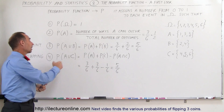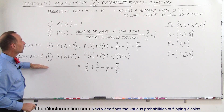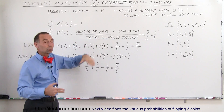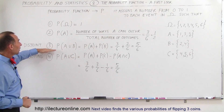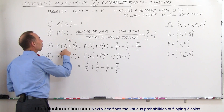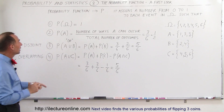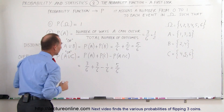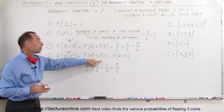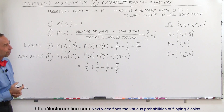Those are the four basic rules of a probability function: One, the probability of the sample space equals 1. Two, the probability of any event is the number of ways that event can occur divided by the total elements in the sample space. Three, the probability of A union B — meaning A or B — when they are disjoint, is simply the sum of the two probabilities. Four, if there is an overlap, P(A union C) = P(A) + P(C) − P(A intersect C). That's the basics of the probability function. Thank you.